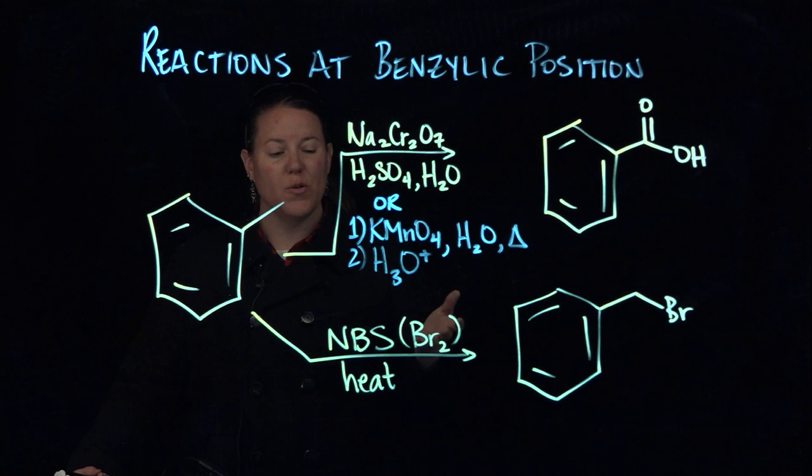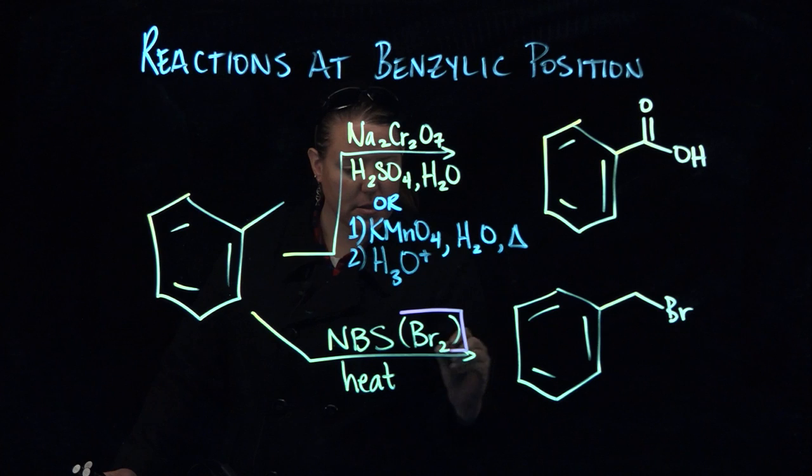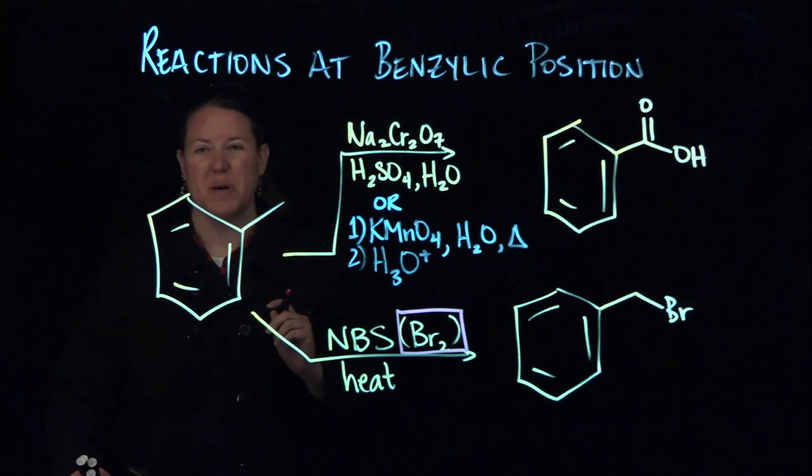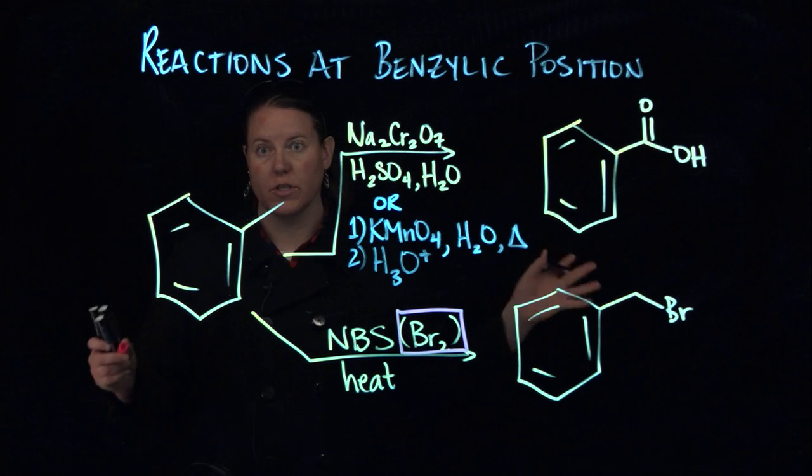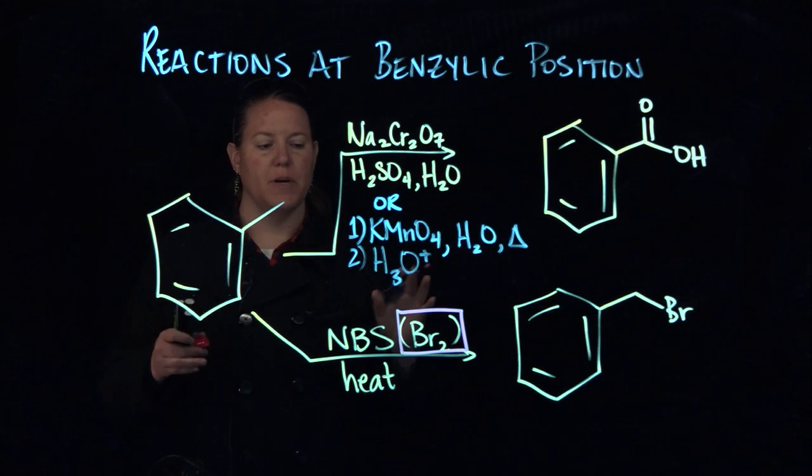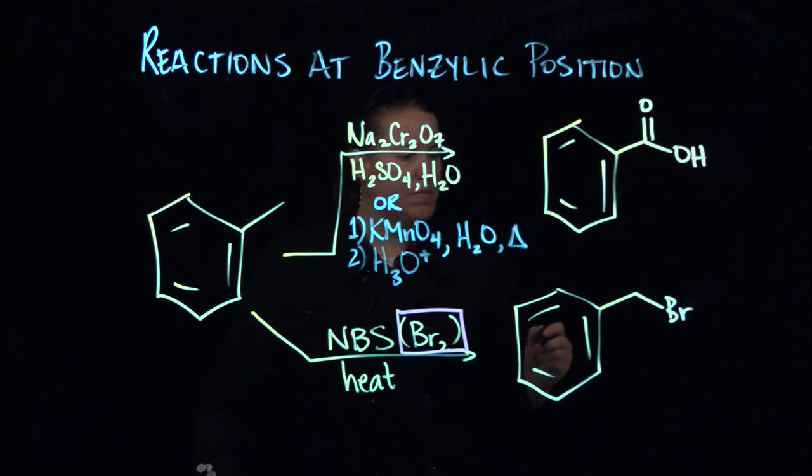But you cannot use Br2 in this reaction - you have to use NBS. Just FYI. Even though you can think of it as Br2, it has to be NBS. That puts on a leaving group, a bromine.